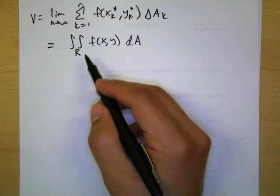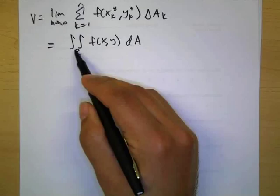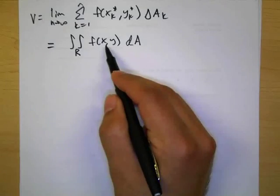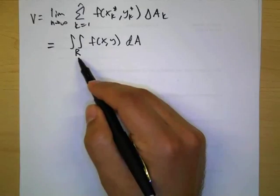And we just put the region that we're integrating over underneath both the integrals so this is what the notation looks like. We read this as the double integral of f of xy over r.